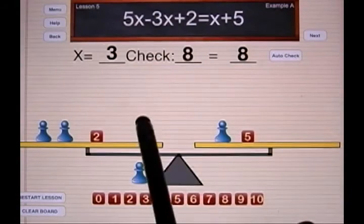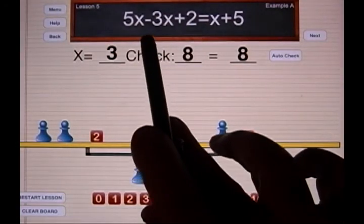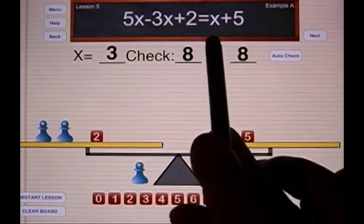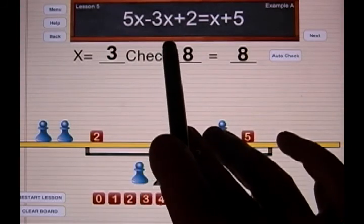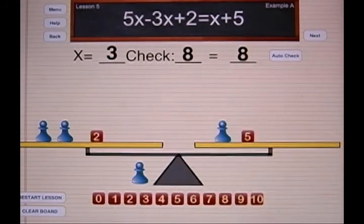So remember, in lesson number five, if you see a subtraction symbol in the setup, after you've placed the five x's in this case, you need to take away three x's before you continue with the setup. Please go on with lesson number five.